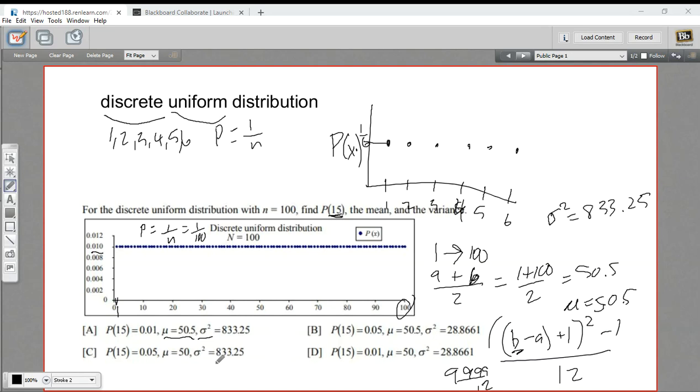So let's see if we can find the correct answers here. Here we've got a mean, a μ of 50.5, a σ² of 833.25, and the probability of getting 15 is 1 over 100. All of that matches up. So that is our answer. Let's look at one more.